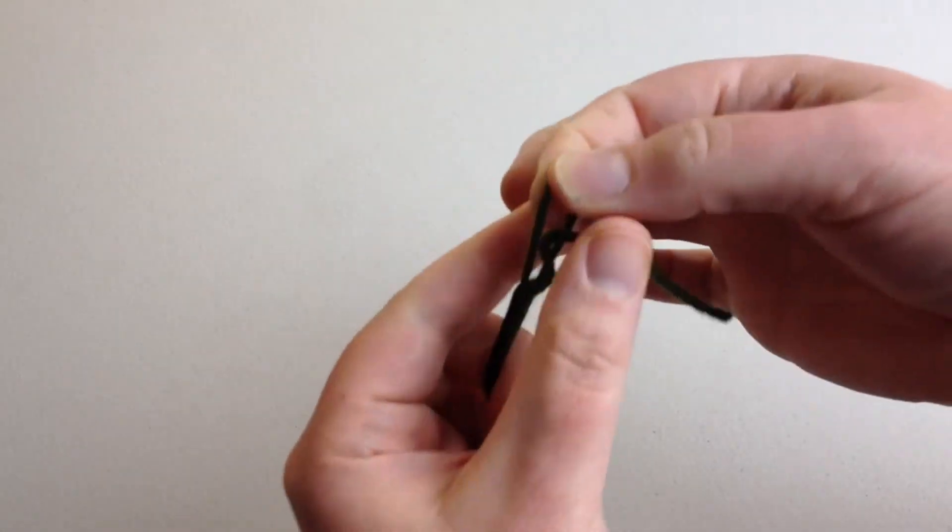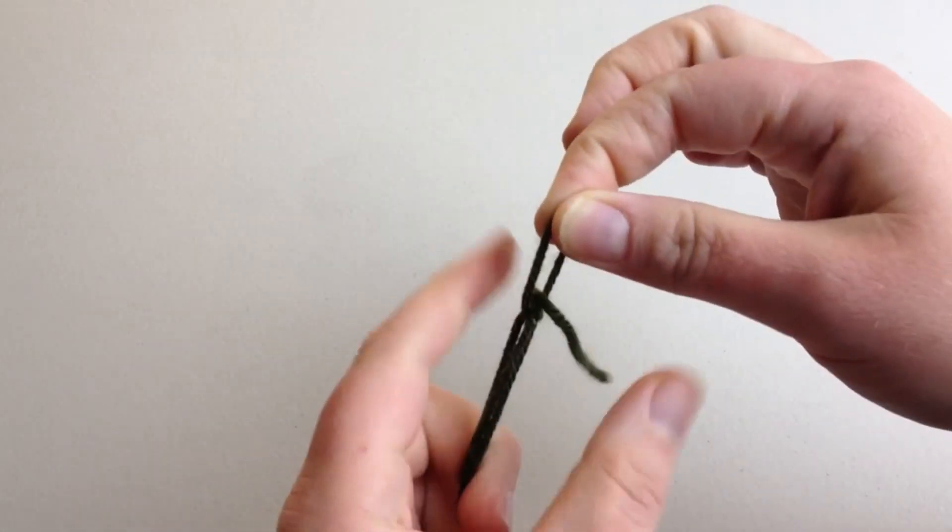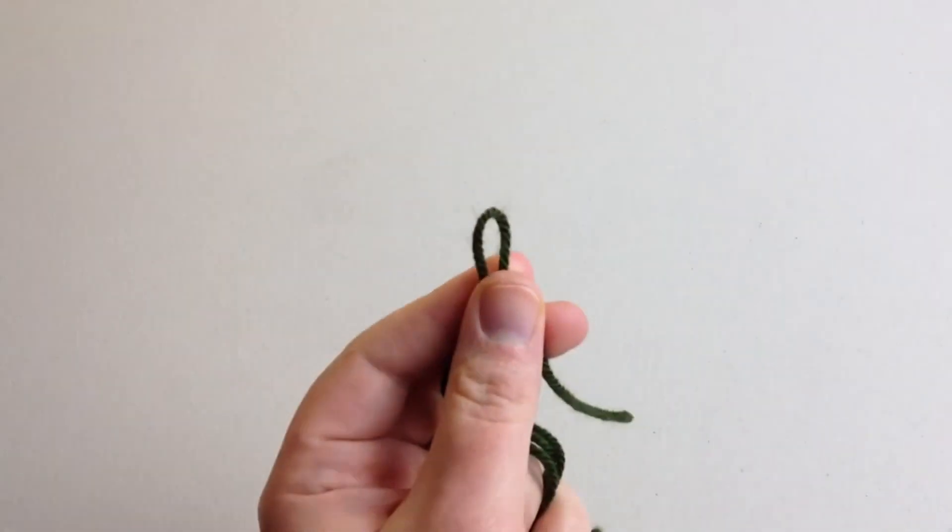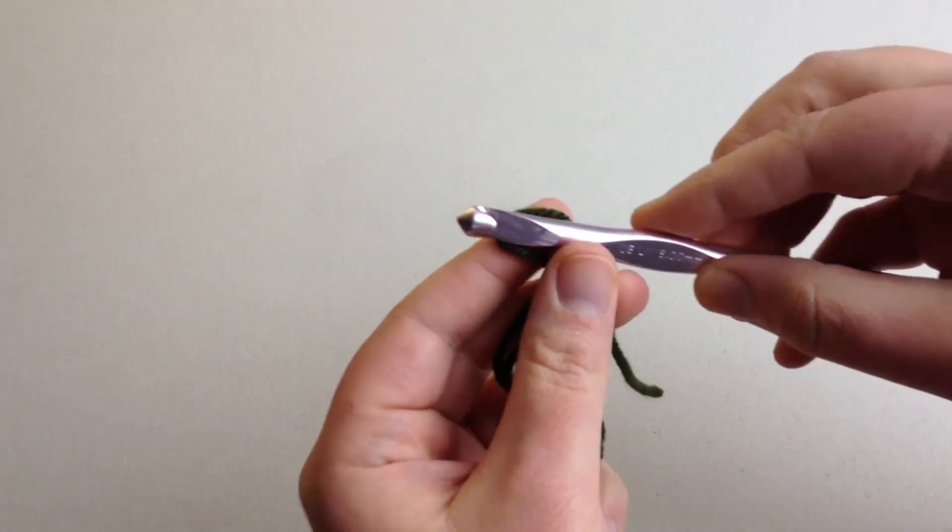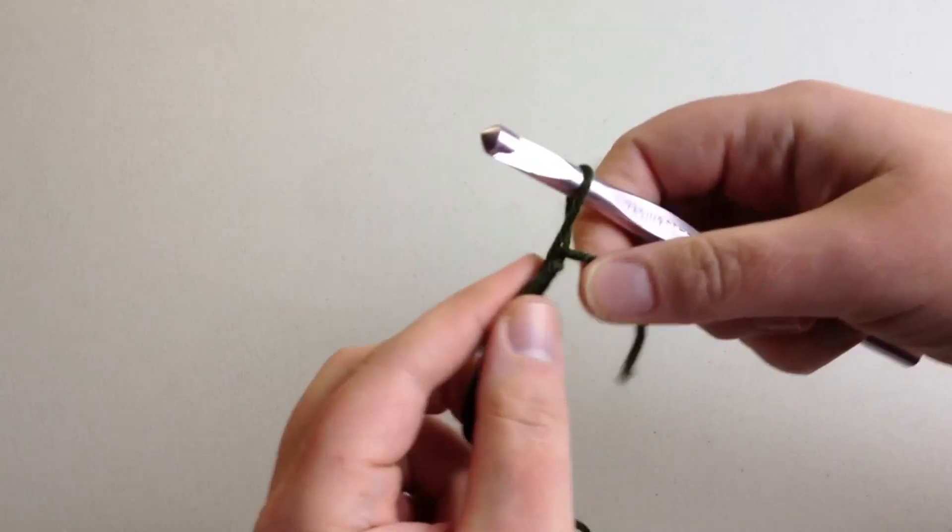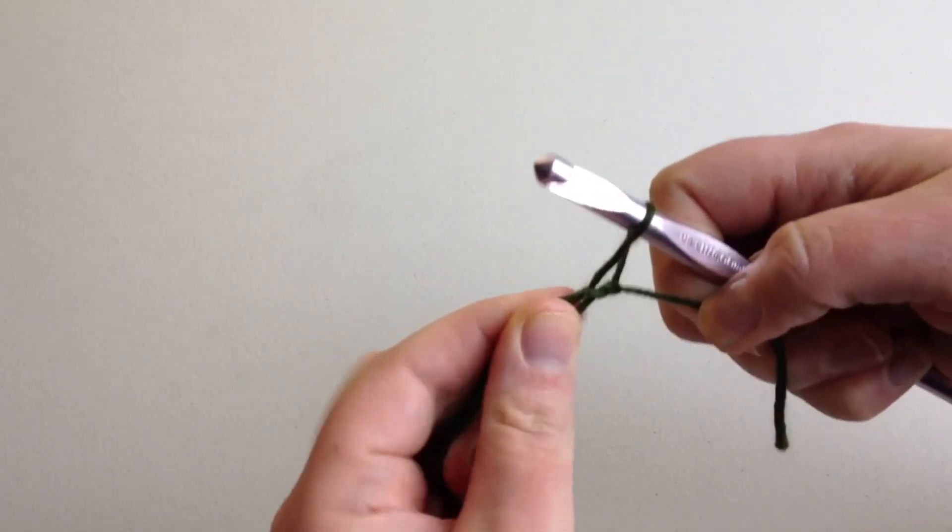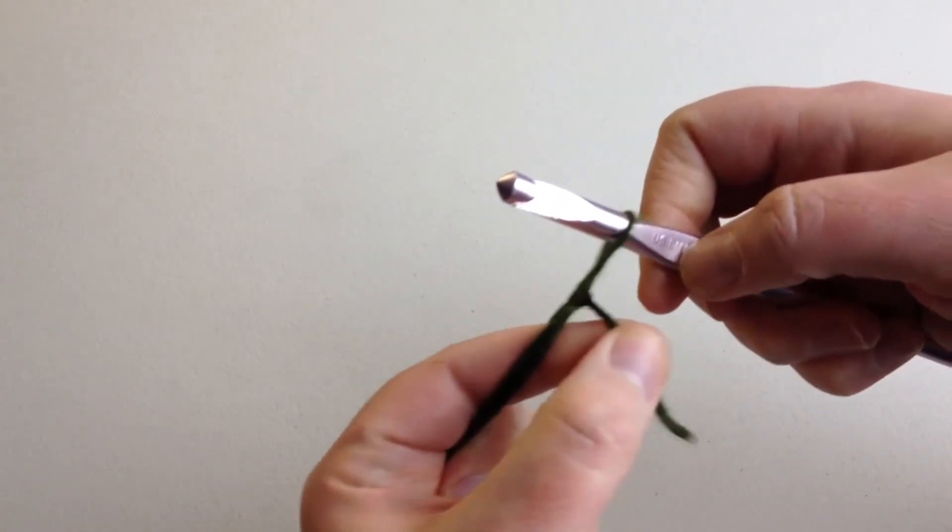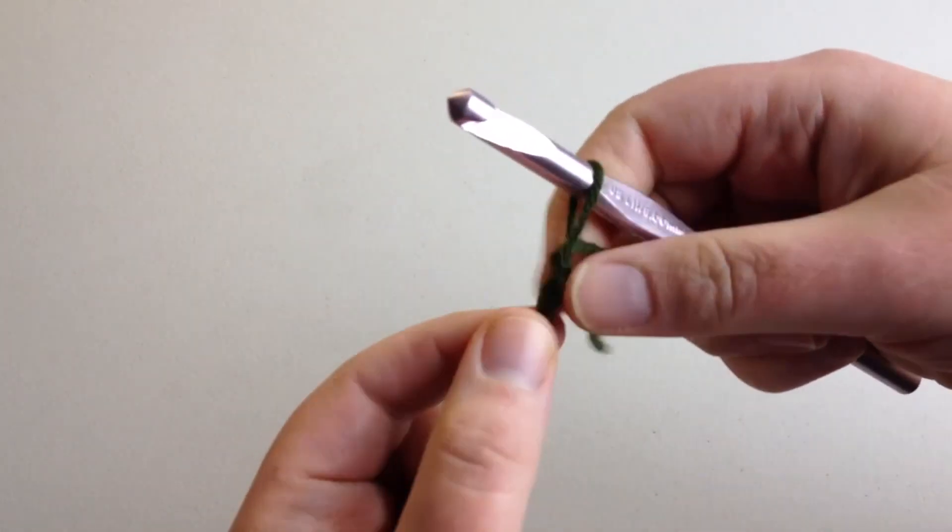Now we've got this extra big loop that we don't need. We want to tighten that up, so we're going to stick in our crochet hook. You can't just tighten on the straggler—it's just not going to tighten.